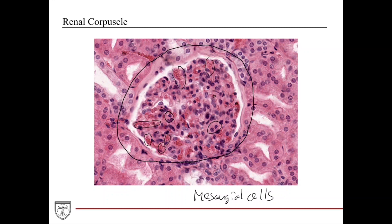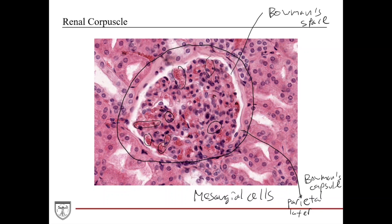The white or clear space within the renal corpuscle is Bowman's space, where blood is filtered and filtrate collects. The outer layer is the parietal layer of Bowman's capsule. The visceral layer can be hard to identify because it's part of the filtration apparatus, intertwined with the capillaries. You're also cutting through a number of different nephrons simultaneously, which is how you see all these different cross sections in the section.